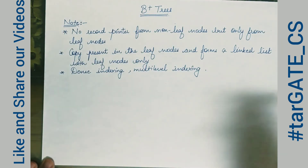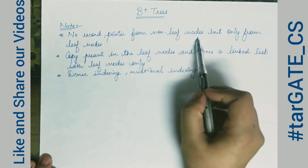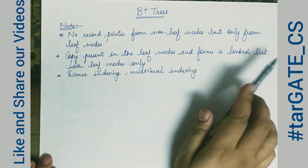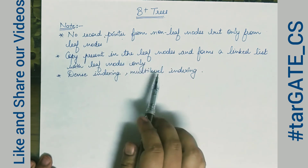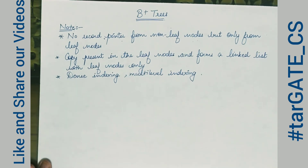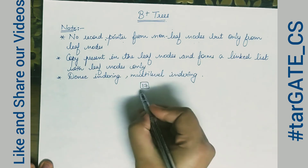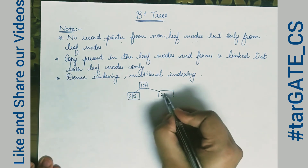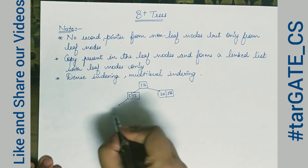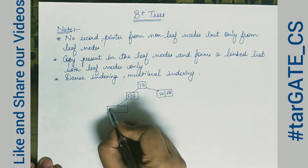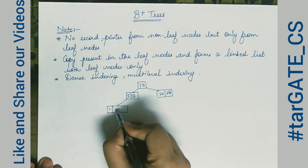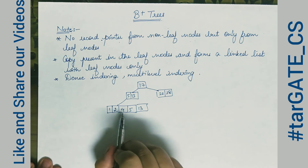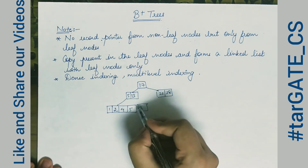In B+ trees, there are no record pointers from non-leaf nodes — only from leaf nodes. A copy of the keys is present in the leaf nodes, and the leaf nodes form a linked list. This is how dense indexing and multi-level indexing is done in B+ trees.